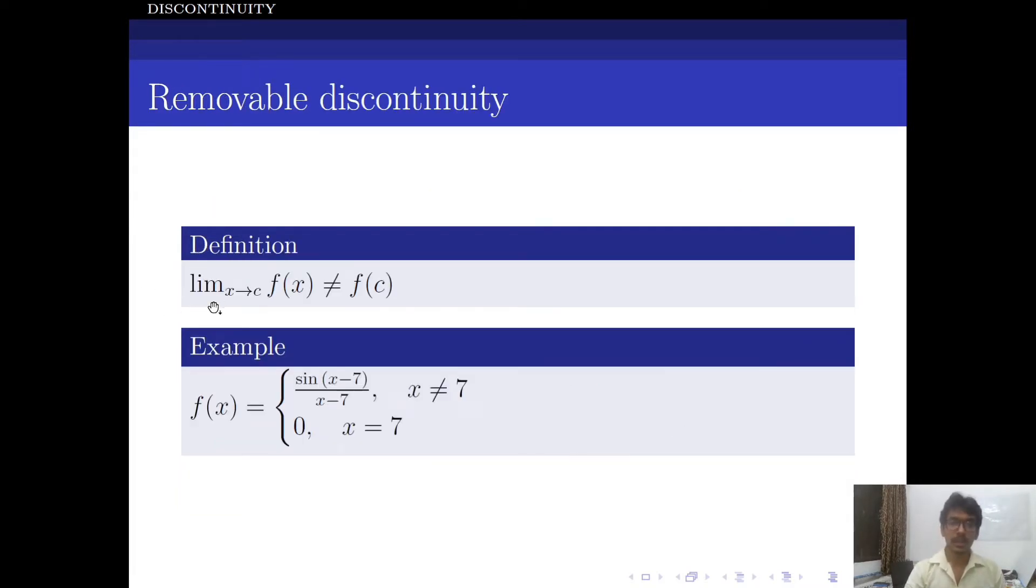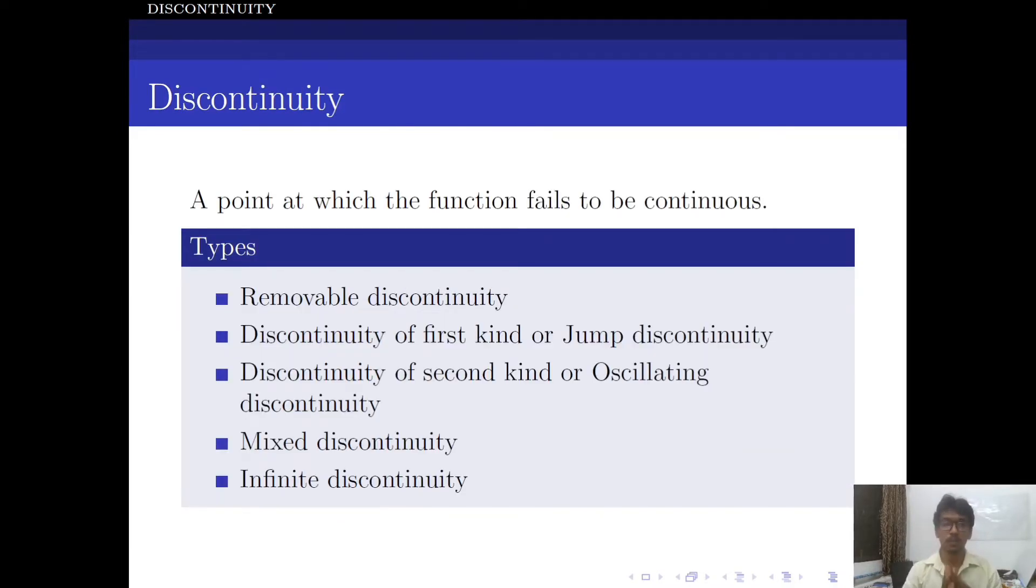Here, you may see that limit x approaches c of f(x) is not equal to f(c). In this case, this is for removable discontinuity. When you have an equal sign here, when your limit x approaches c of f(x) is same as your f(c), then we say that the function is continuous at that point.